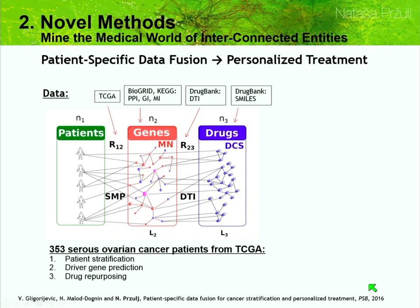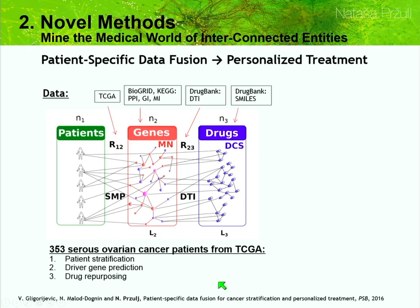In our paper from the Pacific Symposium on Biocomputing 2016, we took data from TCGA for 353 patients with serous ovarian cancer. For each patient we have their somatic mutation profile — links from patients to mutated genes. We took protein-protein interactions, genetic epistatic interactions, and metabolic interactions from BioGrid and KEGG. We then went to DrugBank and used drug-target interactions as well as a drug chemical similarity network computed using SMILES. Within the same framework we want to do three tasks: better stratify patients, predict new driver genes, and repurpose already known drugs.